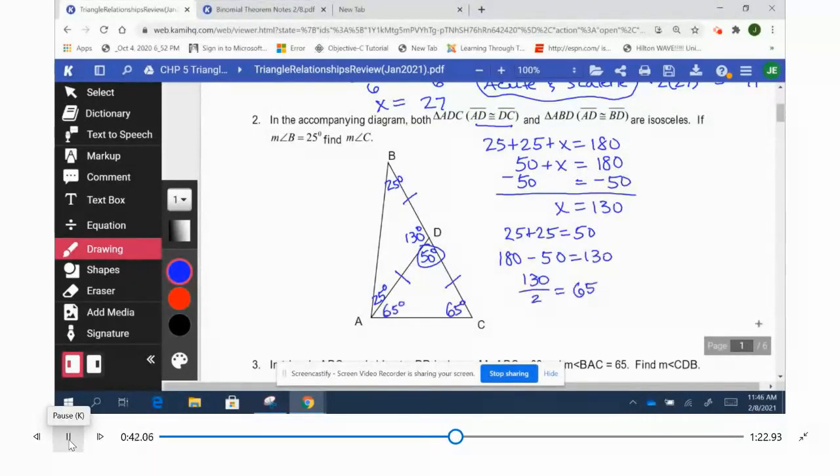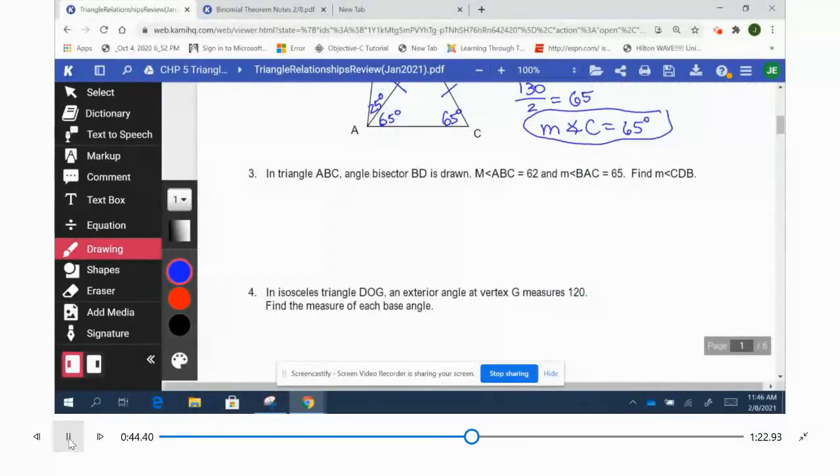The measure of angle C is 65. For problem 3, we're going to sketch a diagram. Triangle ABC, angle bisector BD is drawn, so it's going to go right through here and bisect angle B. Angle ABC is 62, so that's going to turn into 31 on each side of the angle bisector.